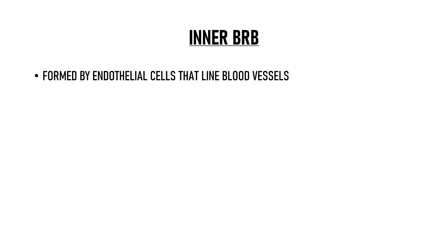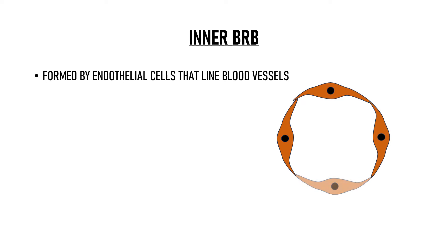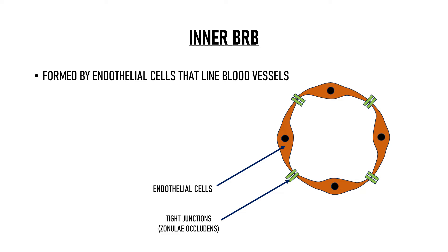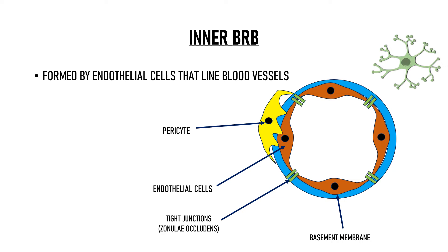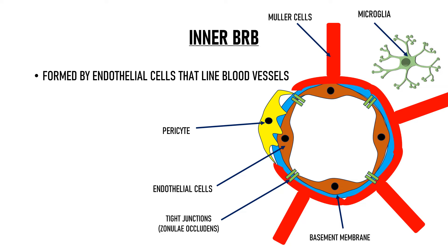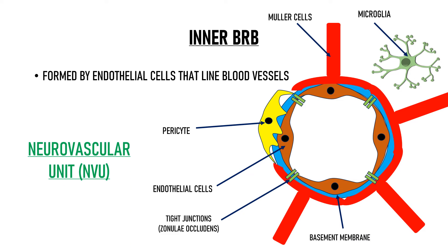The inner blood retinal barrier is formed by the endothelial cells that line these blood vessels. These endothelial cells are joined by tight junctions known as zonula occludens. These endothelial cells also have a thick basement membrane surrounding them, so the spaces between the endothelial cells are sealed. These together form the inner blood retinal barrier. Additionally, these endothelial cells are covered by other cells like pericytes, astrocytes, microglia, and Müller cells, which also contribute to the function and integrity of the inner blood retinal barrier. All these cells together form what is known as the neurovascular unit, or NVU.